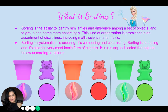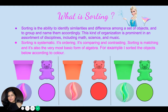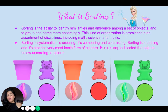What is sorting? Sorting is the ability to identify similarities and differences among a set of objects and to group and name them accordingly. This kind of organization is prominent in an assortment of disciplines including math, science, and music. Sorting is systematic, it is ordering, it is comparing and contrasting. Sorting is matching, and it's also the very most basic form of algebra.